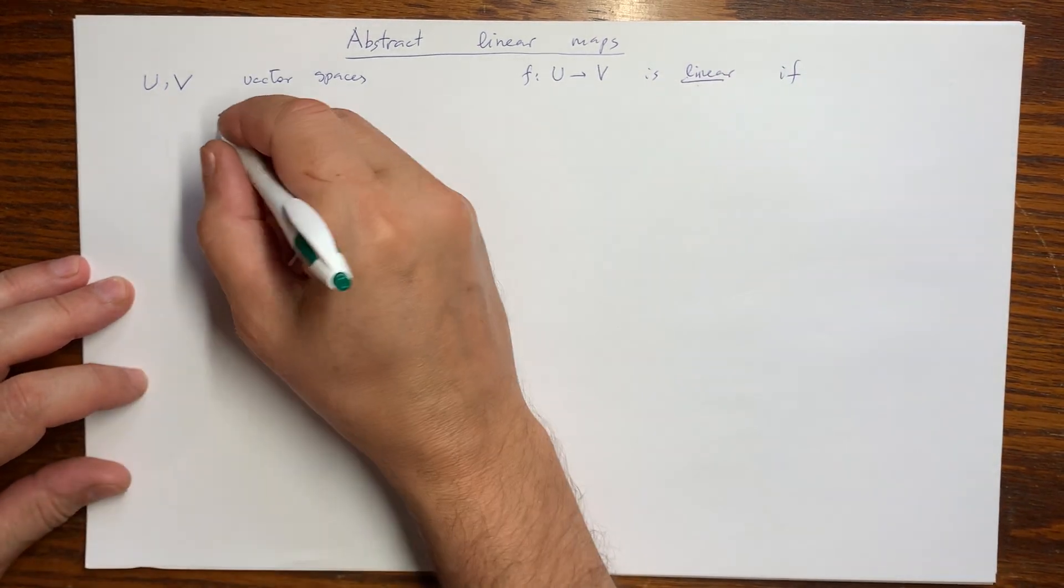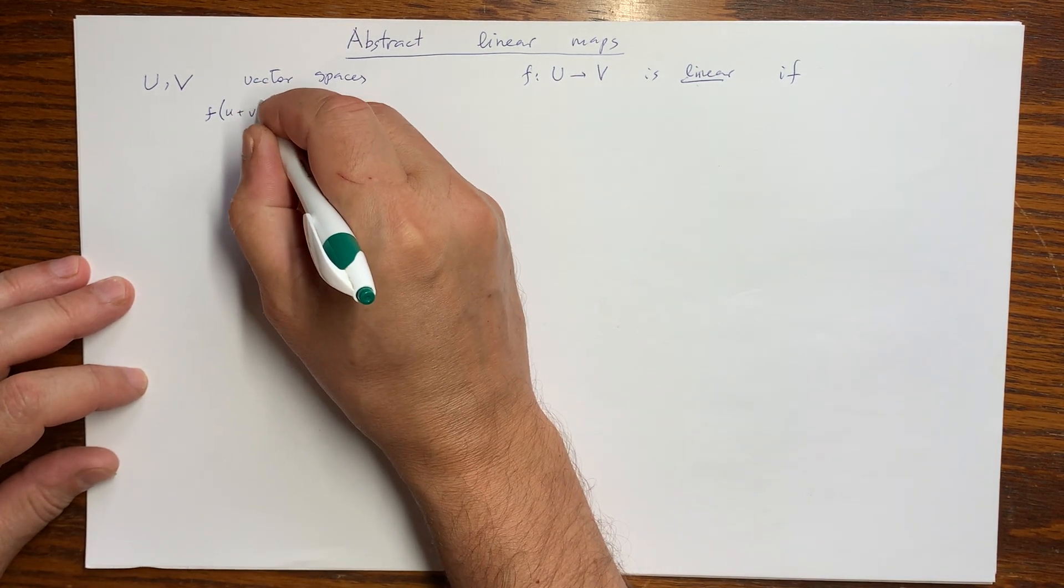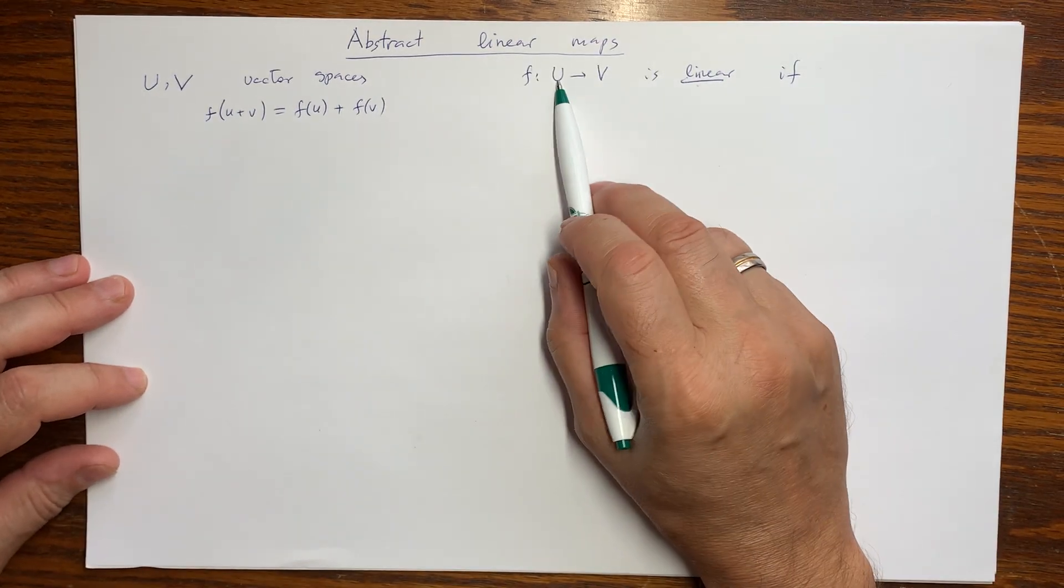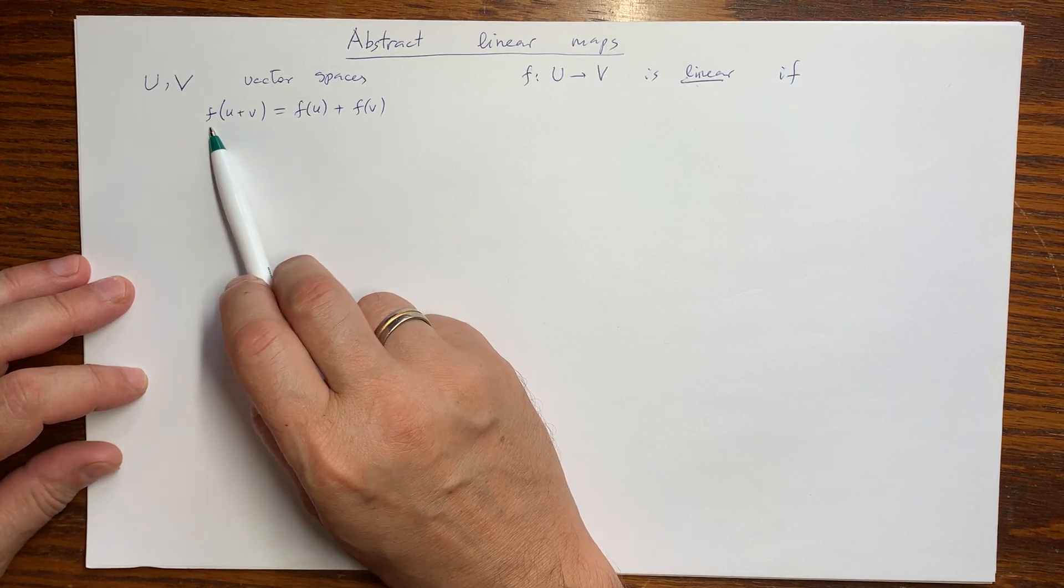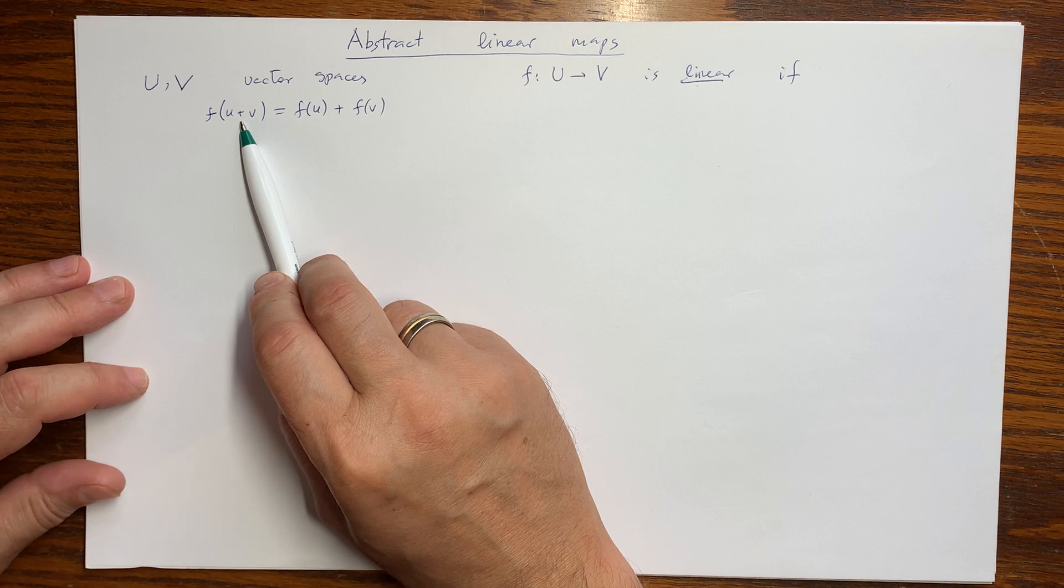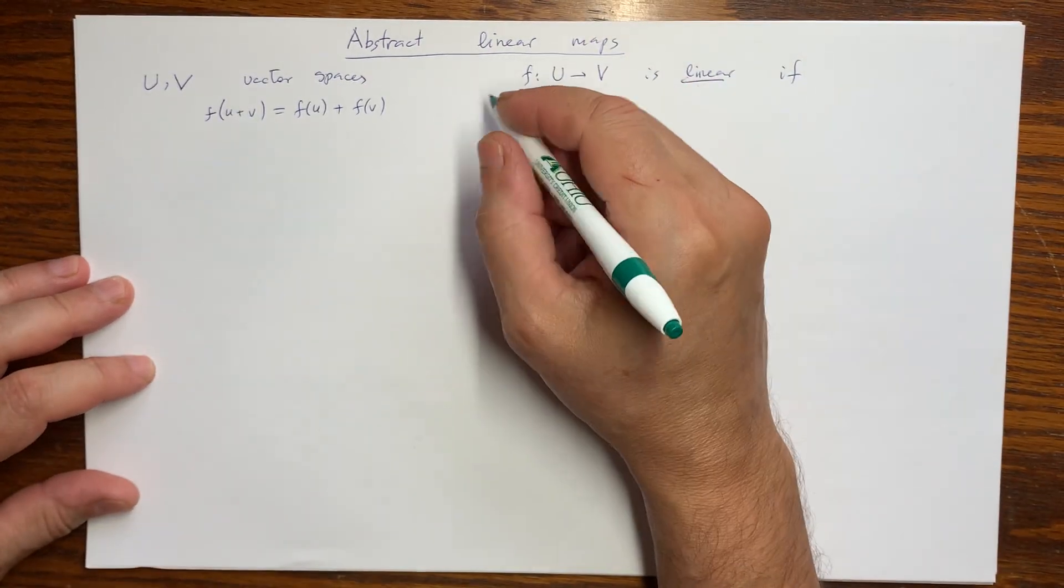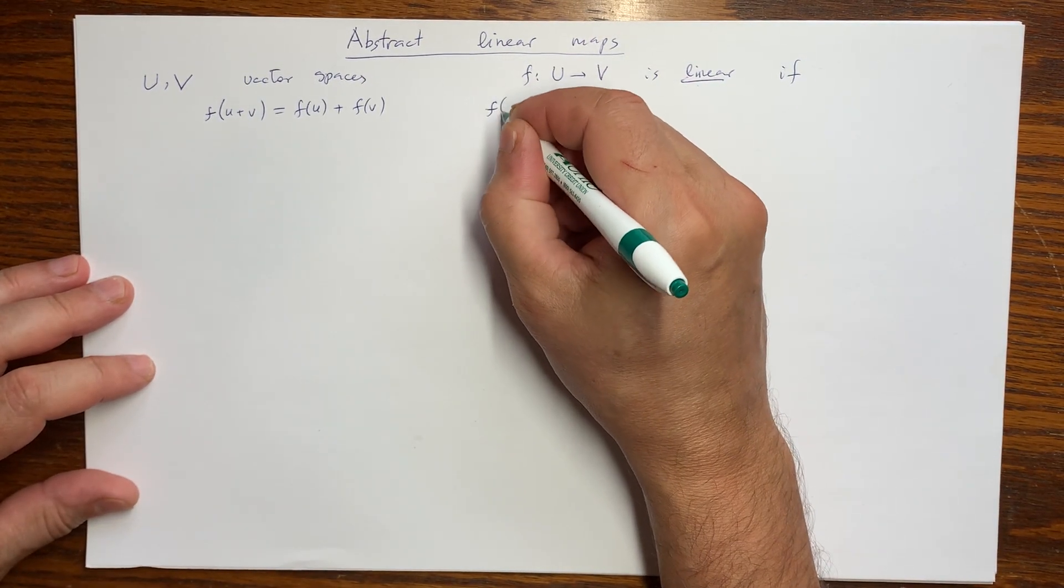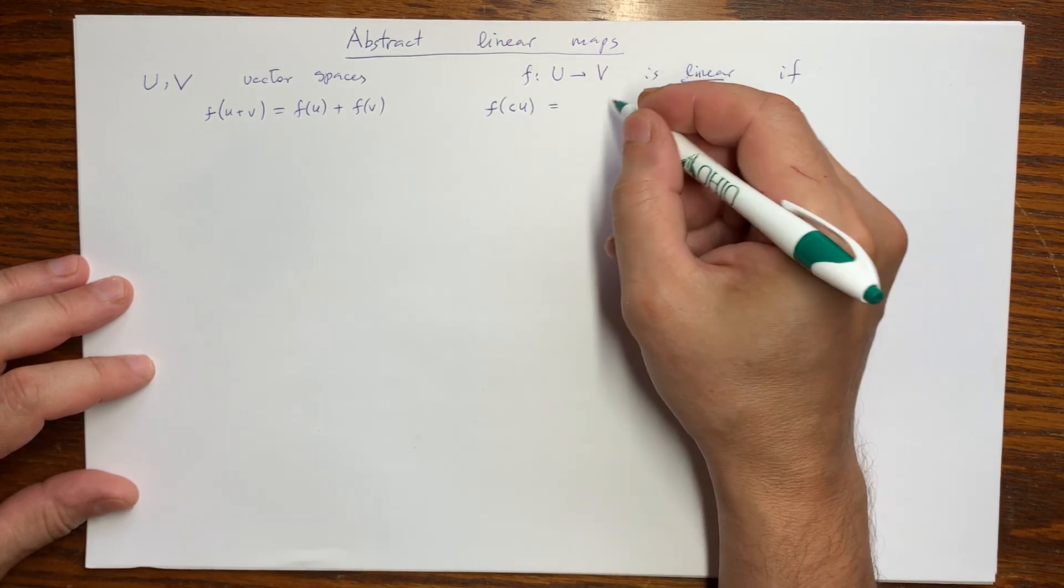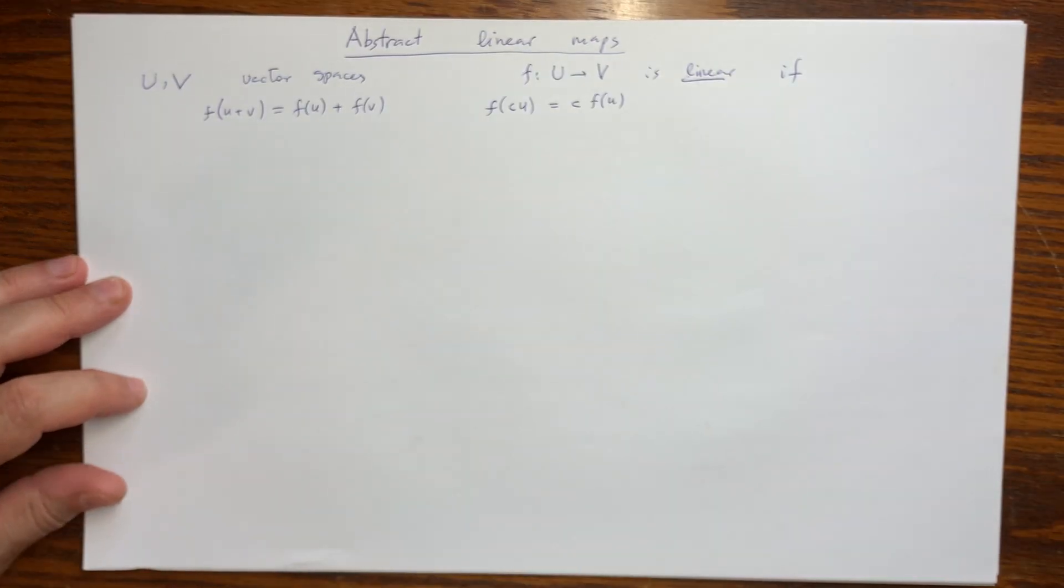If two properties are satisfied, as before, as for maps between coordinate vector spaces, the map is additive for any pair of vectors in the source. It doesn't matter how we compute this. We can compute the image of the sum of vectors, or we can map the vectors into the second vector space and sum them there, the result should be the same. And the second property is preservation of scaling. It doesn't matter where we scale before or after doing the map, the result will be the same.